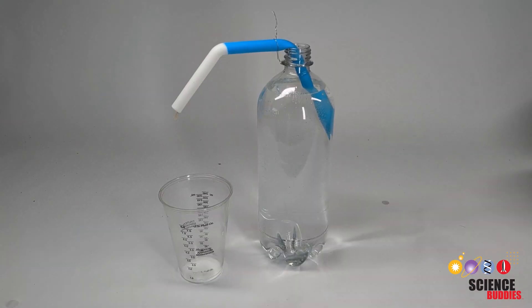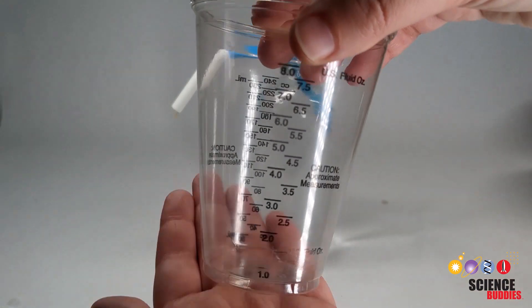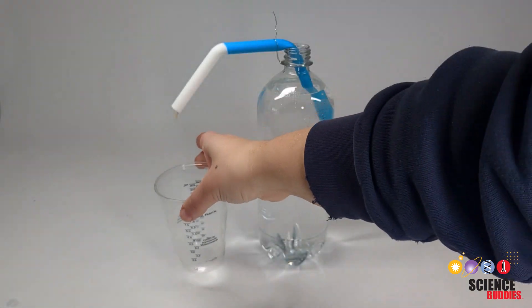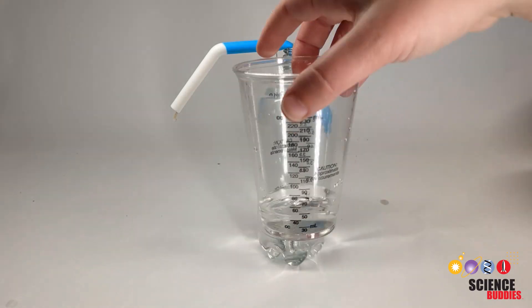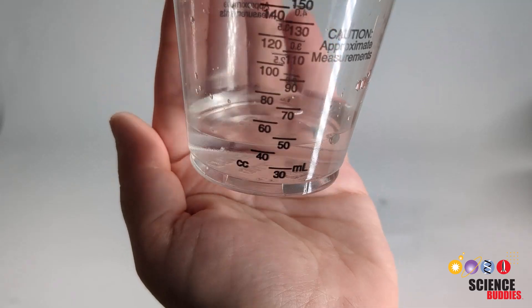Measure the output of the drip irrigation system by adding a measuring cup below the end of the wick. Record the amount accumulated for about one week, then use this information to keep the volume of water used for each irrigation system consistent between each system and trial.